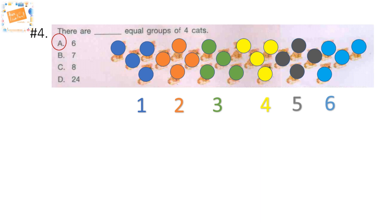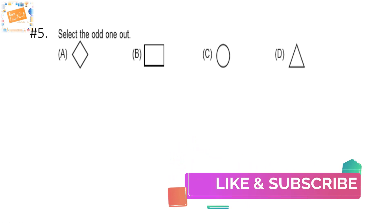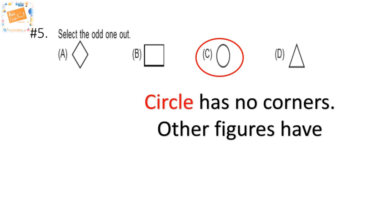Next question is select the odd one out amongst the diamond, square, circle, and triangle. Have you chosen your answer? I think you've got it right. Yes, it's option C. But why? You have your reason, I have mine. Because circle has no corners while all other figures have corners. You see? That's why the odd one out is option C.